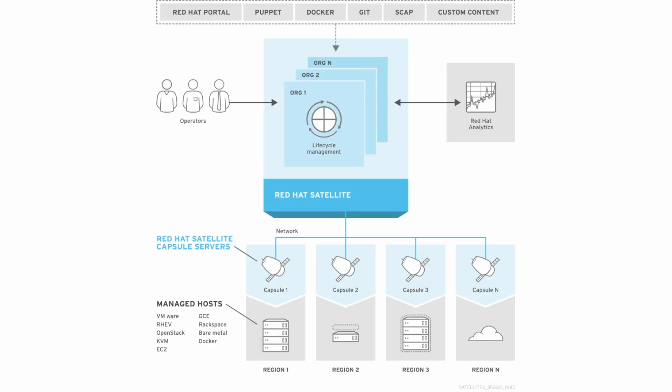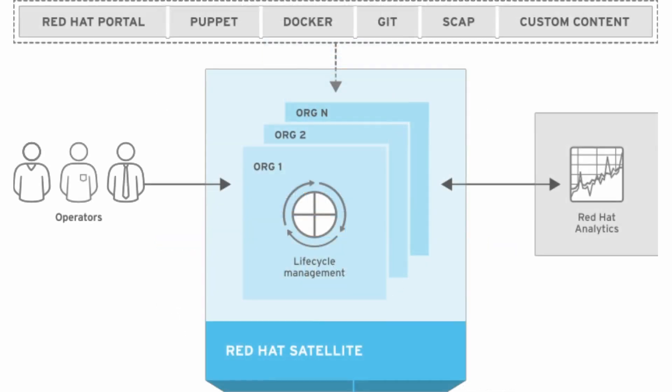This is a basic diagram that outlines the general topology of Red Hat Satellite Server. As you can see, the main server imports various forms of content to help provision and configure your systems. This includes repositories, Puppet modules, and other forms of content.